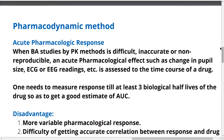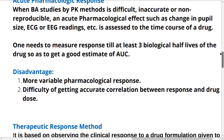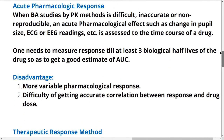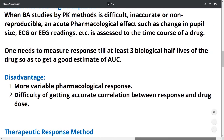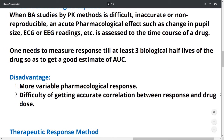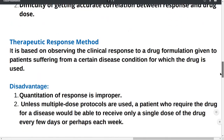The acute pharmacological response method has certain disadvantages: there is more variable pharmacological response, and there is difficulty in getting an accurate correlation between the response and the drug dose. The other pharmacodynamic method is the therapeutic response method.